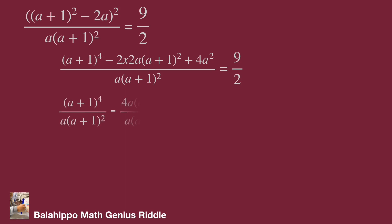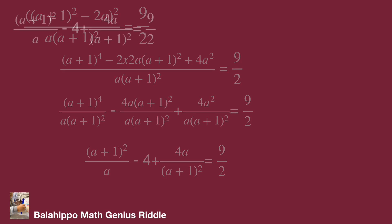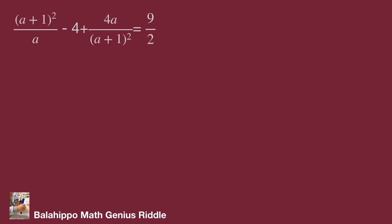Separate this fraction to 3 separate terms. It's clear to simplify it by eliminating (a + 1)² in each fraction's terms. Then we get (a + 1)² over a minus 4 plus 4a over (a + 1)² equal to 9 over 2. It's easier to handle the equation.